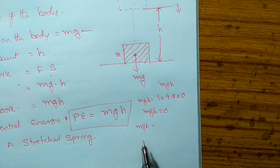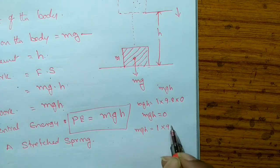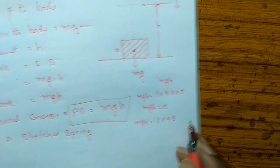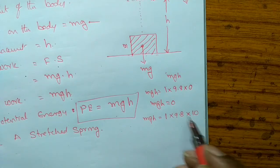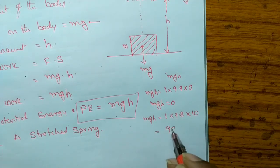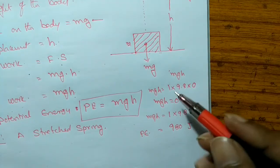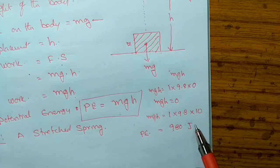When m equals 1 kg, g equals 9.8, and height h equals 10 m, the potential energy equals 1 into 9.8 into 10, which is equal to 980 joules. When height is 100 m, the potential energy equals 1 into 9.8 into 100, which equals 9800 joules.